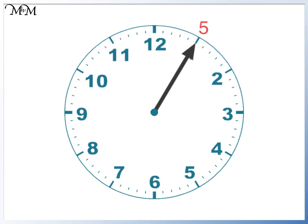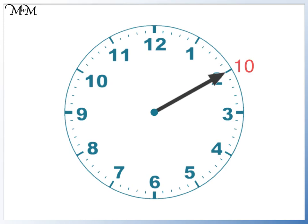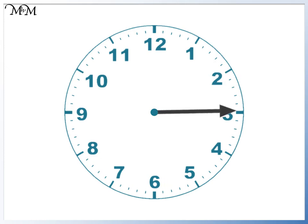So when the minute hand is pointing at 1, this is 5 minutes past. Each number on the clock is a multiple of 5. 1 times 5 is 5. 2 times 5 is 10, so 10 minutes past. 3 times 5 is 15, so 15 minutes past. This is generally known as quarter past.